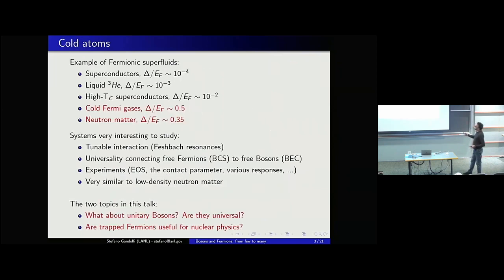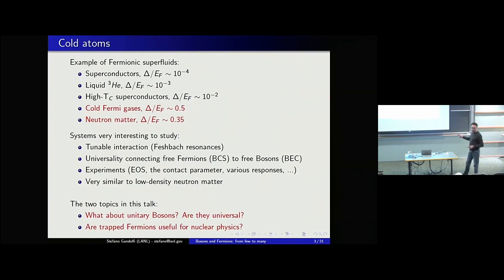As examples of fermionic superfluids, we have superconductors, liquid helium-3, and HTC superconductors, which have a pairing gap going from 10⁻⁴ to 10⁻² in units of the Fermi energy. Cold Fermi gases are very strongly paired, with a pairing gap of order 0.5 — much higher than the others. Recently it has been shown by calculations and from neutron star observations that neutrons can also be strongly paired in some regime with a pairing gap very similar to cold Fermi gases. These systems are interesting because the interaction can be tuned in experiments through Feshbach resonances. There is a new universality connecting free fermions to free bosons.